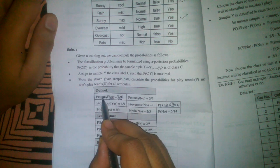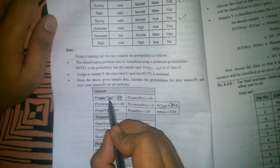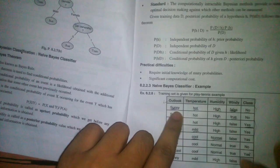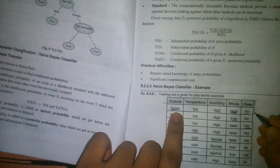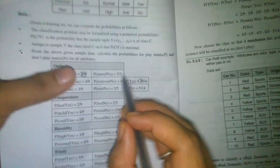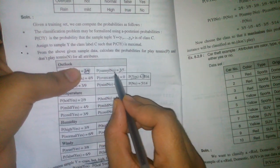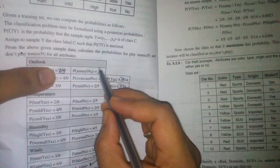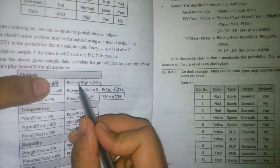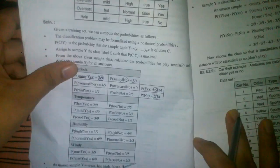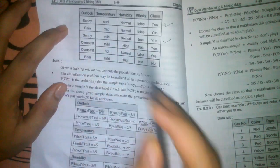For P(sunny | no), we look for rows where the outlook is sunny and the class is no. We find three such rows. Since there are five total no values, P(sunny | no) = 3/5. We similarly calculate the probability for every distinct attribute in each column with respect to both classes.